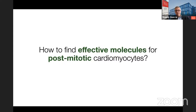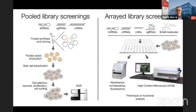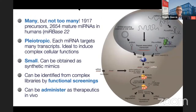How can we find non-coding RNAs that are effective for our applications, for example in post-mitotic cardiomyocytes? We love screenings. Non-coding RNAs are small and very amenable to arrayed library screenings in 96 or 384 well plates with readouts by high-content microscopy. Libraries are available for microRNAs, siRNAs, LNAs, and guide RNAs for CRISPR-Cas9. We especially love microRNAs because there are probably a bit more than 2,000 microRNAs in humans — all known and synthesizable as synthetic mimics that can simply be purchased.